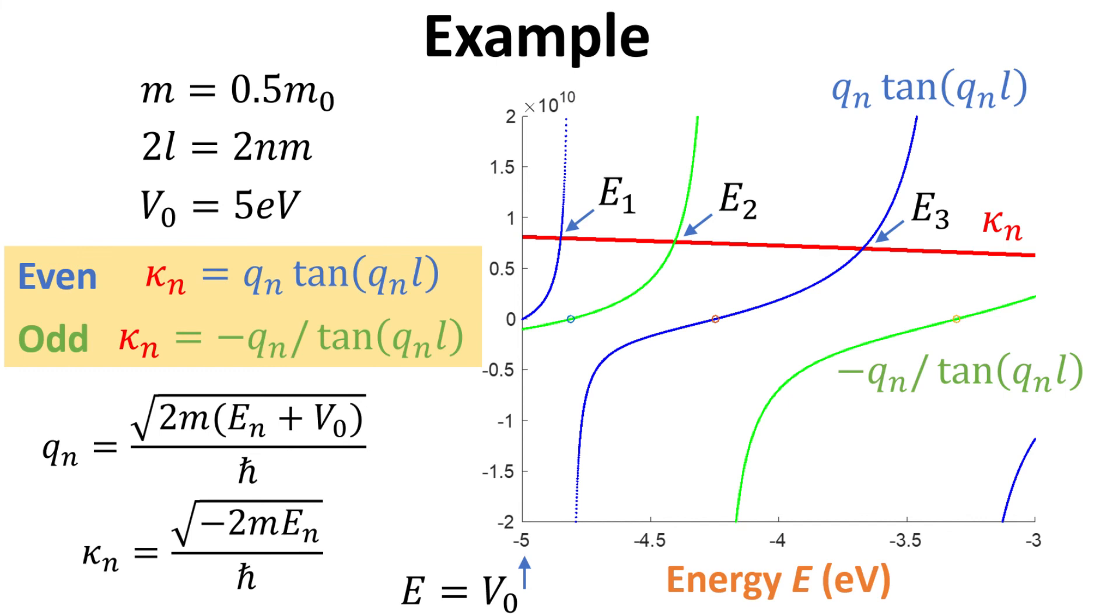We also indicate the location of the bottom of the well, located at E equals minus 5 eV. We see that the eigenenergies are not equidistant, with larger separation in energy as the energy index increases. This is consistent with what we expect in the infinite well case.